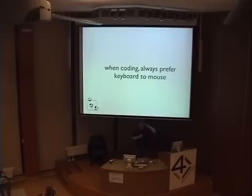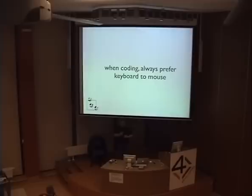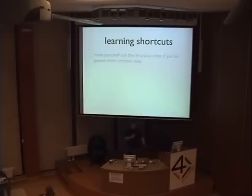So it's really easy for me to say you should always learn shortcuts, but it's hard. Have you ever opened up the keyboard shortcut help file in Eclipse? It's like pages and pages long and it's full of a lot of really useful stuff like 'to move the cursor one character to the right use the right arrow key.' But hidden inside all of that stuff are some really useful things. So how can you force yourself to learn keyboard shortcuts? One way is to make yourself use the shortcut even if you've gotten there another way — if you pick a menu and it has a keyboard shortcut on it, dismiss the menu and use the keyboard shortcut, because that gives you a nice in-context way of doing that.